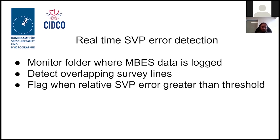As Jean-Guy presented, the vertical bias associated with the error estimated through this method corresponds to what we expect when we compute ray tracing through two known SVP profiles, confirming that the method is detecting the error in the profile. Some tuning on various datasets still needs to be done. Currently, surveyors cast a new profile when the surface sound speed difference between the surface measurement and the profile exceeds two meters per second. We now need to figure out which threshold captures an amount of error significant enough to justify casting a new profile.